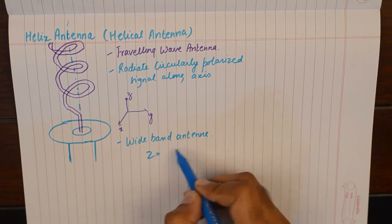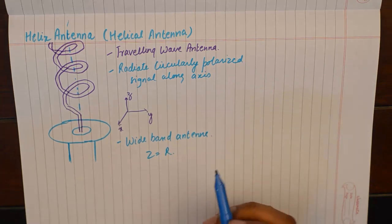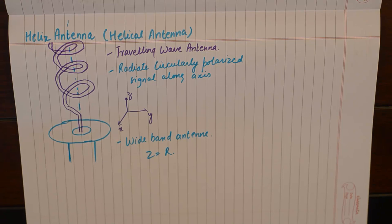The impedance will only contain the real part, which is the resistance. If we go along with these points to study helix antenna, it'll be easier to interpret the construction and the objective with which this antenna was made.